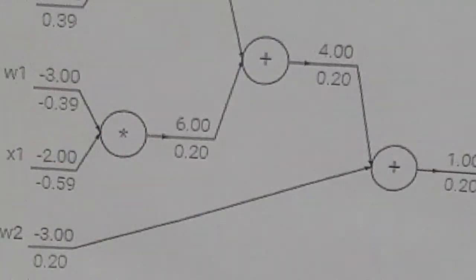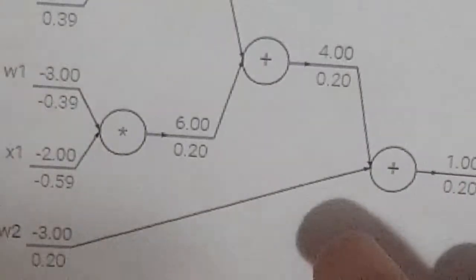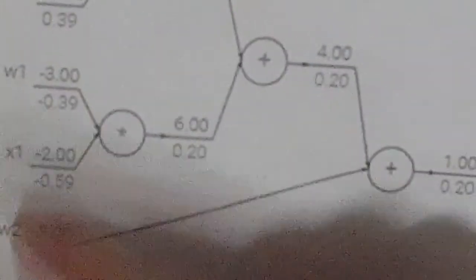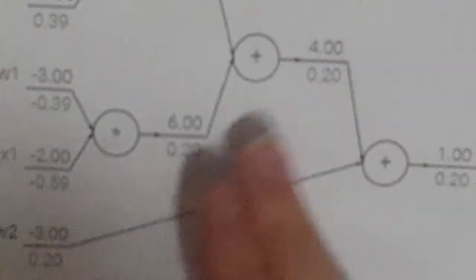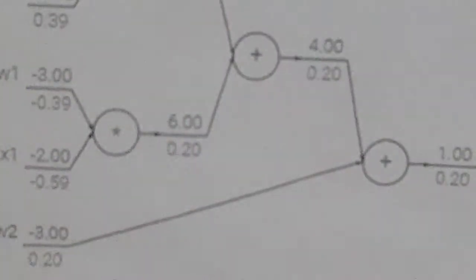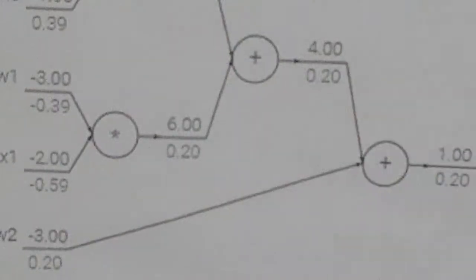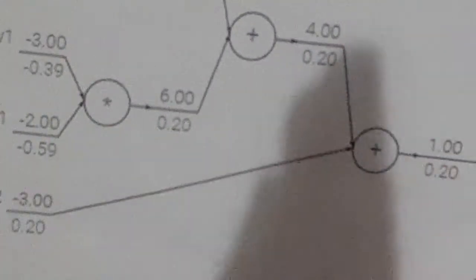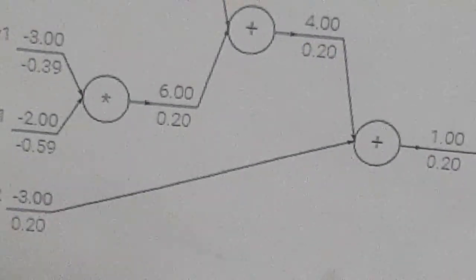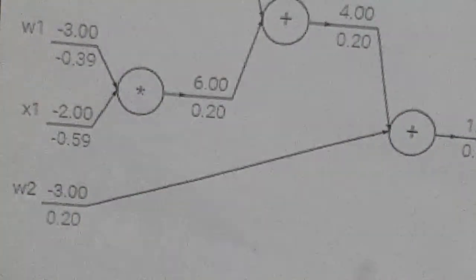Now we have a plus gate, so we're getting into multivariable calculus. For x + y, the partial derivative with respect to x is 1, multiplied by our previous derivative gives 0.2. And we also get 1 for y, multiplied by our previous derivative gives 0.2. So an add gate — the local gradients are just 1, and it basically splits the incoming gradient. You'll see people use add gates in custom architectures to bring a derivative from a later layer back to an earlier one to balance the graph.